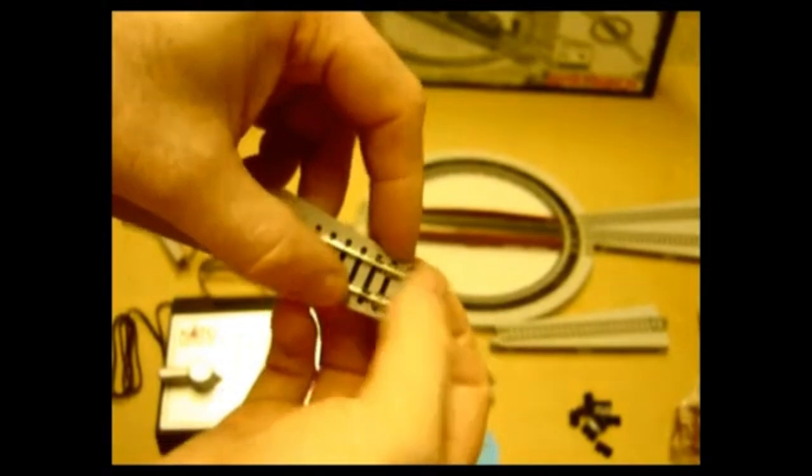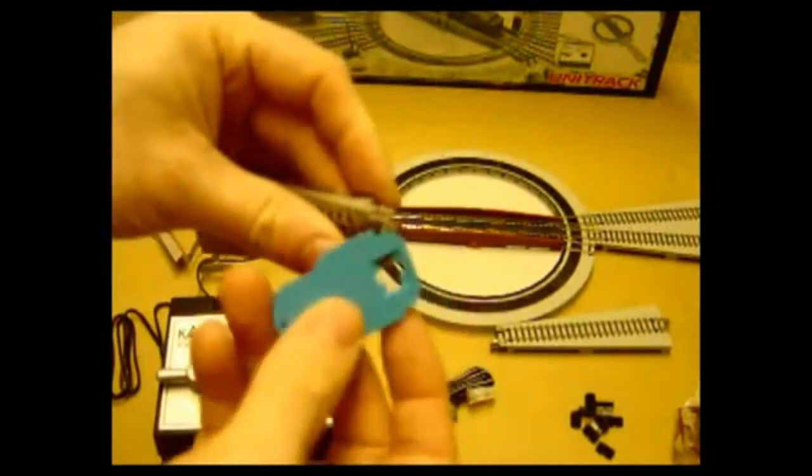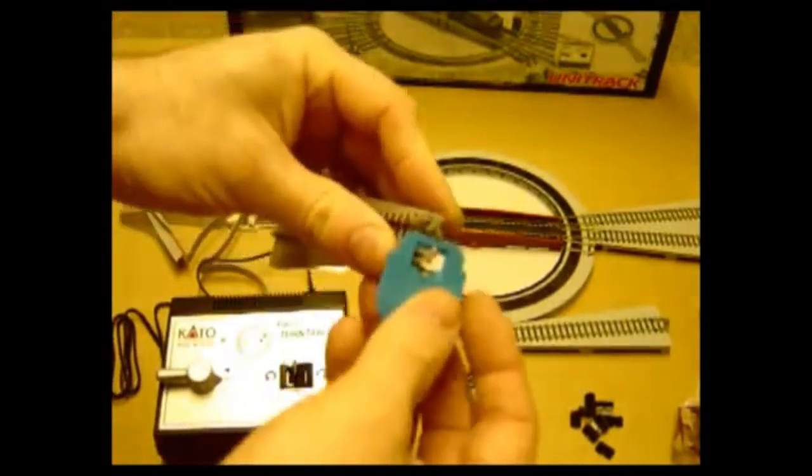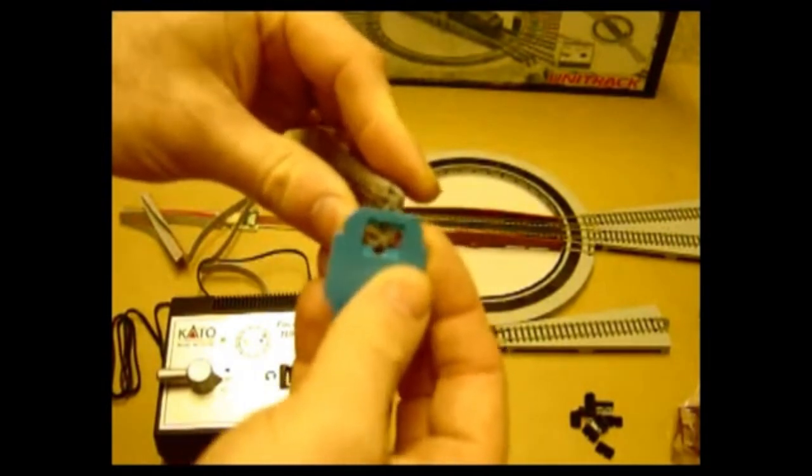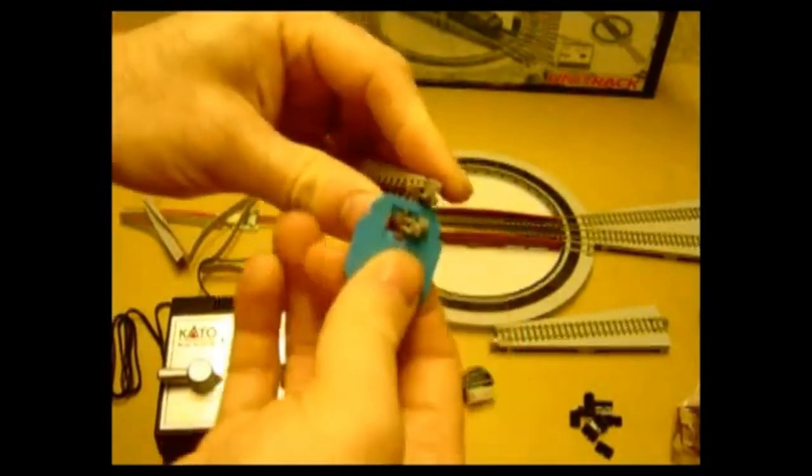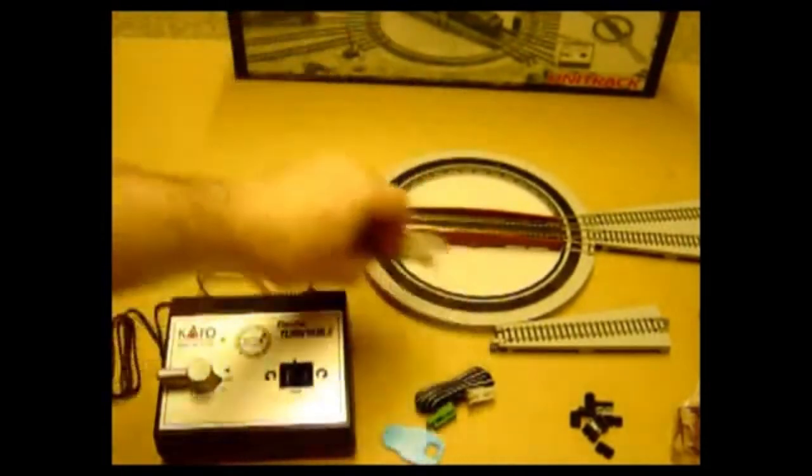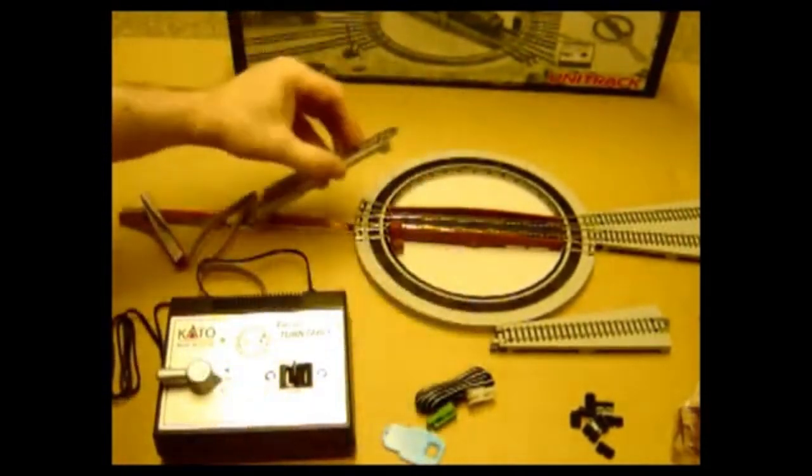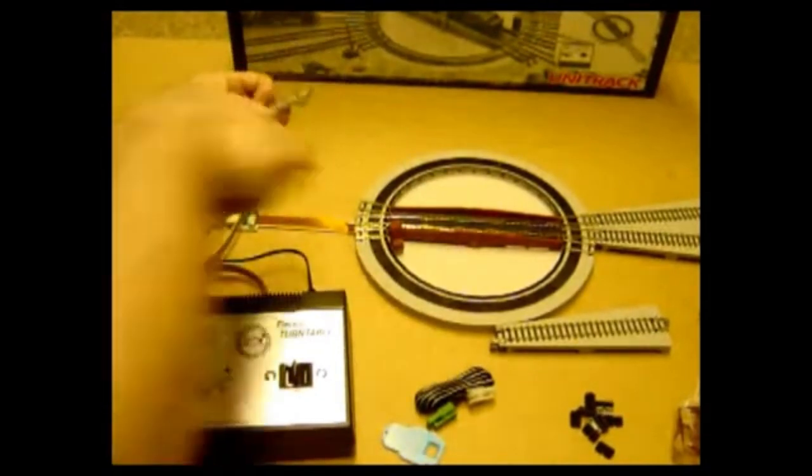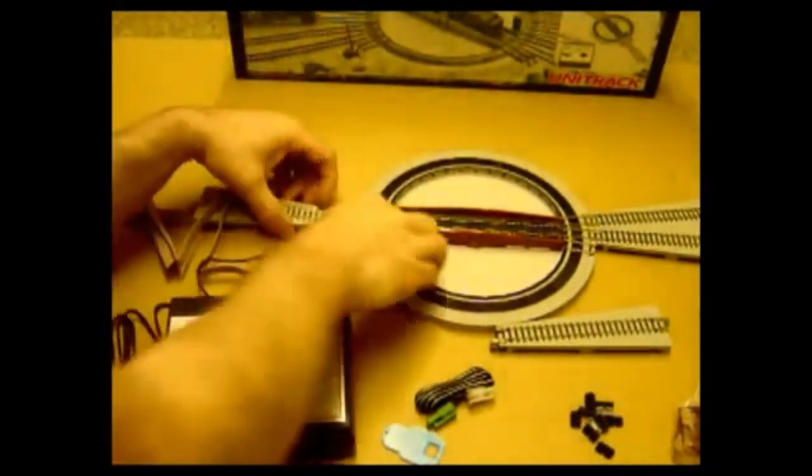They just pop in like that with the clip towards the middle. You can at any time remove the unijoiners using this tool, and it just slides on, and then you can pull this out. And then the section, I've already got a half unijoiner in there, just clips in.